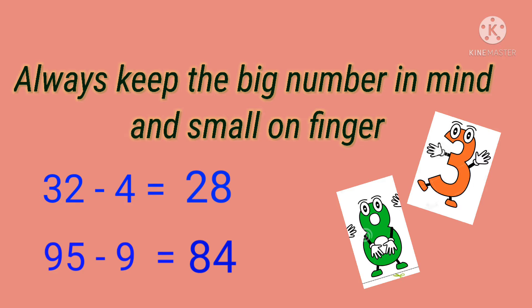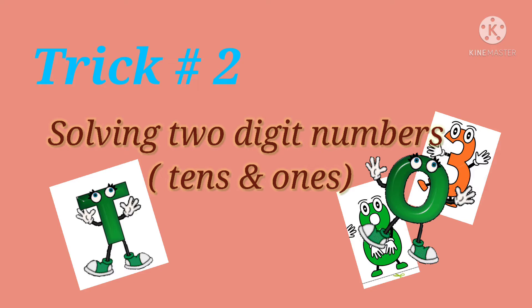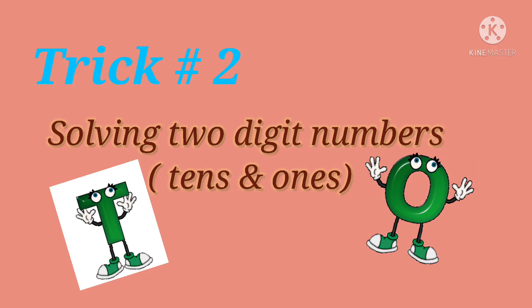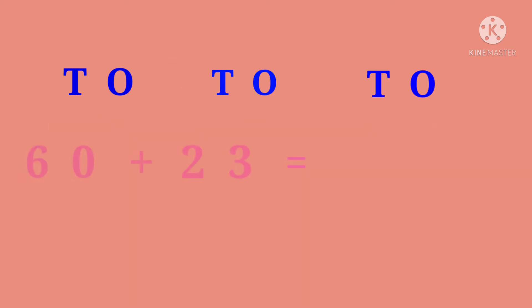I have a practice worksheet for this trick. Moving on to the second trick: solving two two-digit numbers addition and subtraction of two-digit numbers. We are going to solve these sums mentally. Now first we will take care of the numbers which are under 1's. 0 plus 3 is equal to 3, so we will write 3 under 1's.